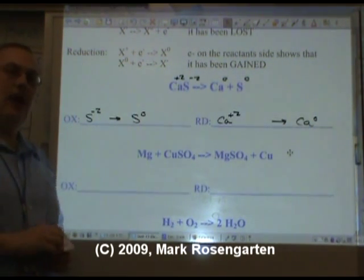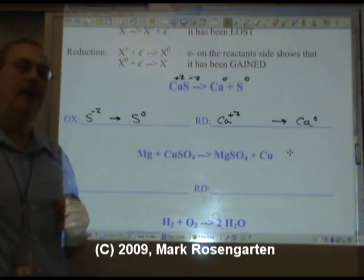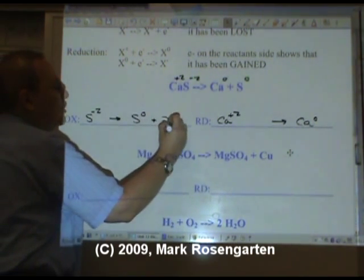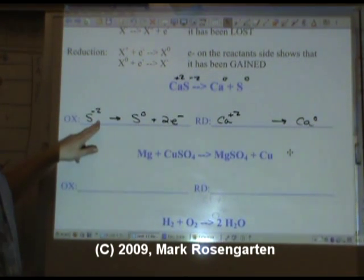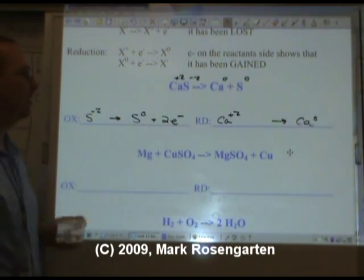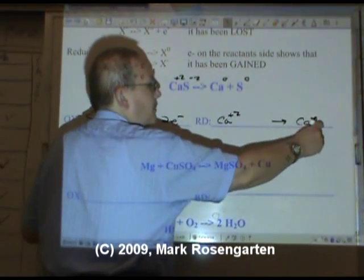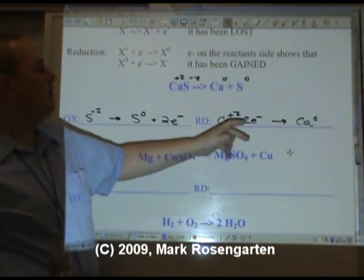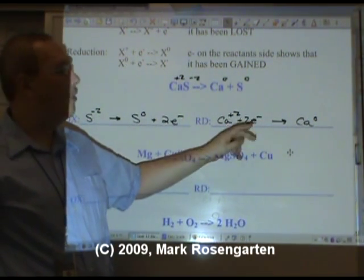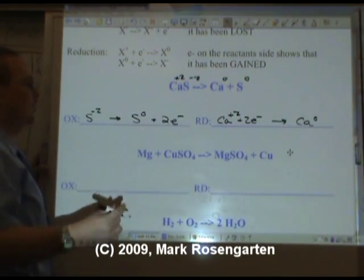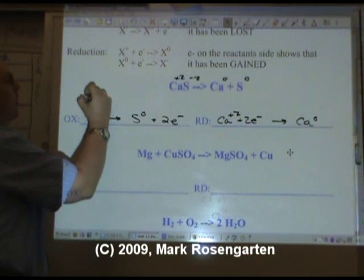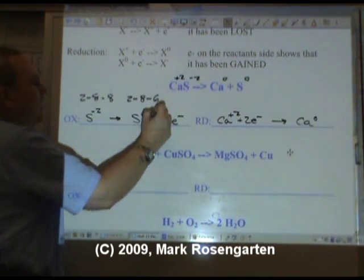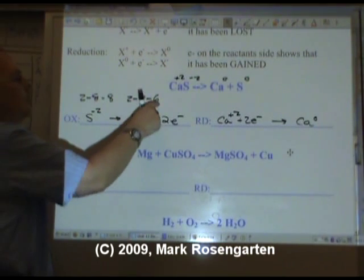Now we put in electrons so that the charges balance on each side. Oxidation — electrons are lost. How do you go from minus two to zero? By losing two electrons. Notice we have minus two on this side and a combined charge of minus two on the other side. From a configuration standpoint, S minus two has an electron configuration of 2-8-8, and S zero has a configuration of 2-8-6, so it lost two electrons.